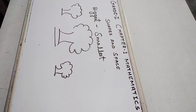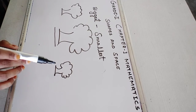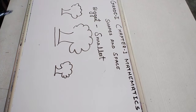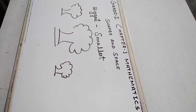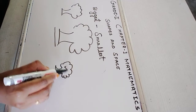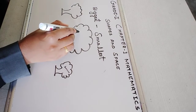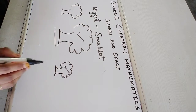Now, tell me which is the smallest tree. Look at the first picture and the third one. Which is the smallest tree in these two? Yes, very good, your answer is correct. Third one is the smallest tree. Is it clear students? Second one is the biggest tree and third one is the smallest tree.